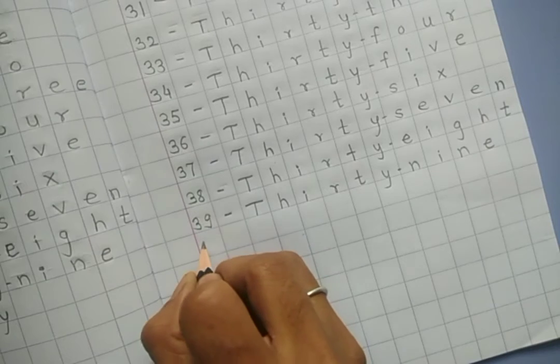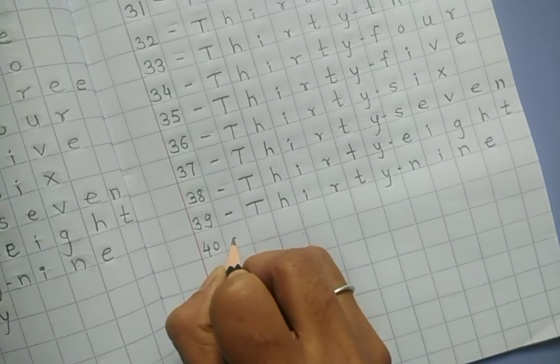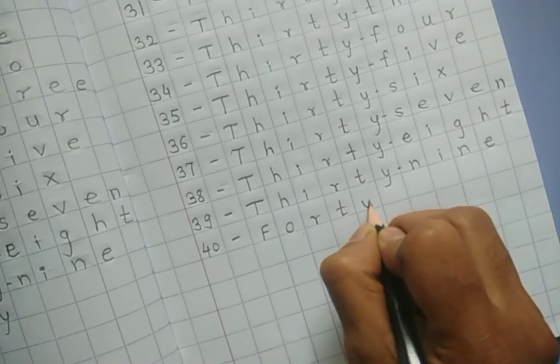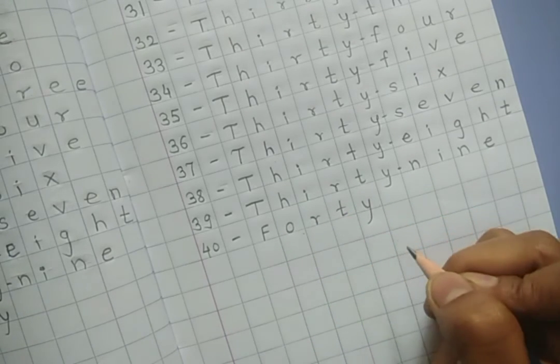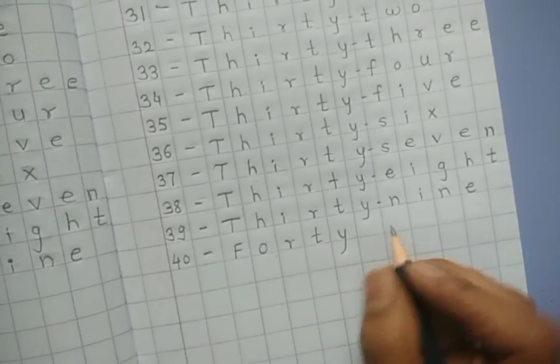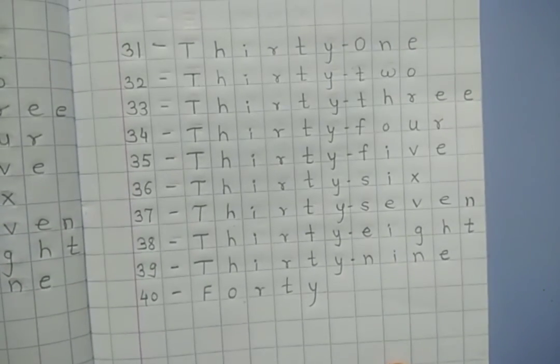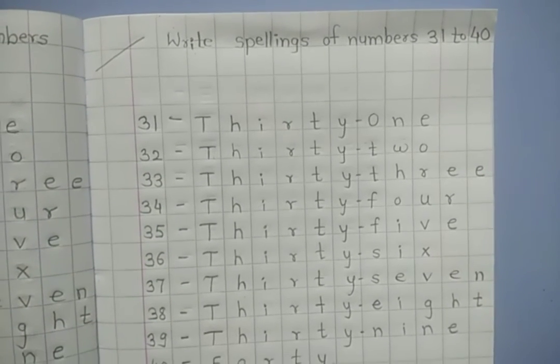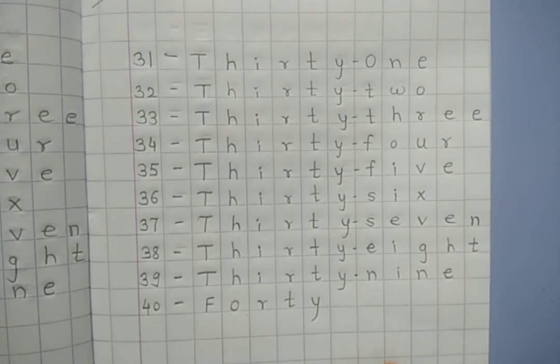Then 40, F-O-R-T-Y, forty. So these are the spellings of number 31 to 40. Students, you have to write like this.